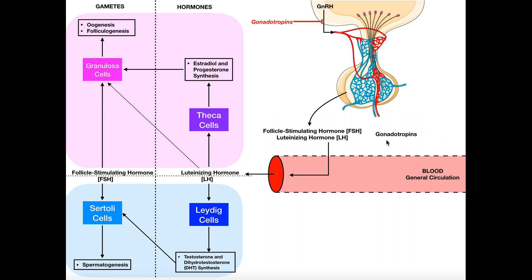Gonadotropins are going to have effects on the gonads, and these two hormones will have different effects in females than in males. On the left side of this organizer, we're looking at gametes — what effects on gametogenesis do these hormones have. On the right side, we're looking at the actual synthesis of hormones. So left equals gametes and right equals hormones.